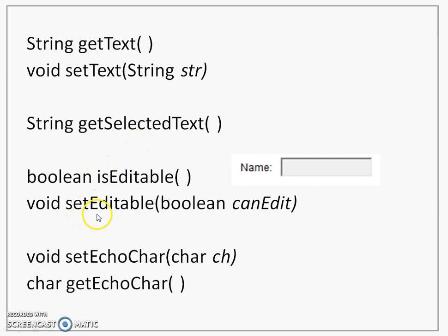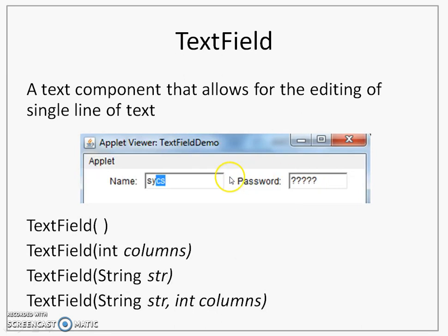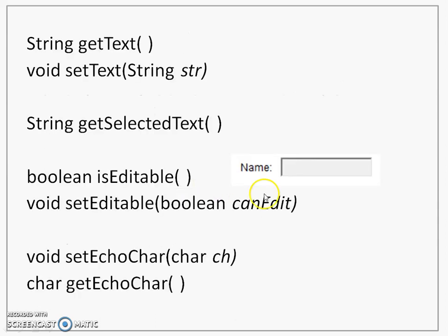The text field can be an editable or non-editable text field. You see an example of a non-editable text field here — it is a little grayed out. In an editable text field you will be allowed to make entries and edit the text. In a non-editable text field you will not be allowed to enter a string, or if a string is already displayed, you will not be allowed to make changes to it. I can set the editable property to true or false by using the setEditable method, passing true or false as a parameter. I can check whether a text field is editable or not using the isEditable method, which returns a boolean value — if it returns true, the text field is editable.